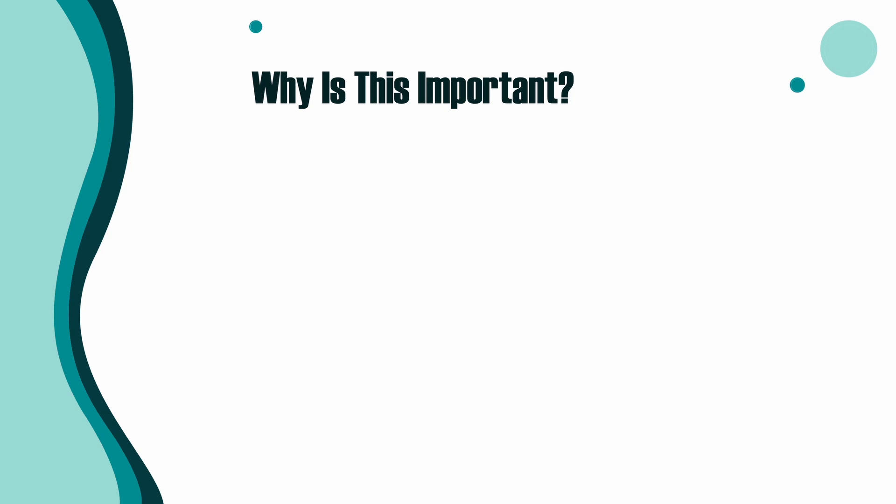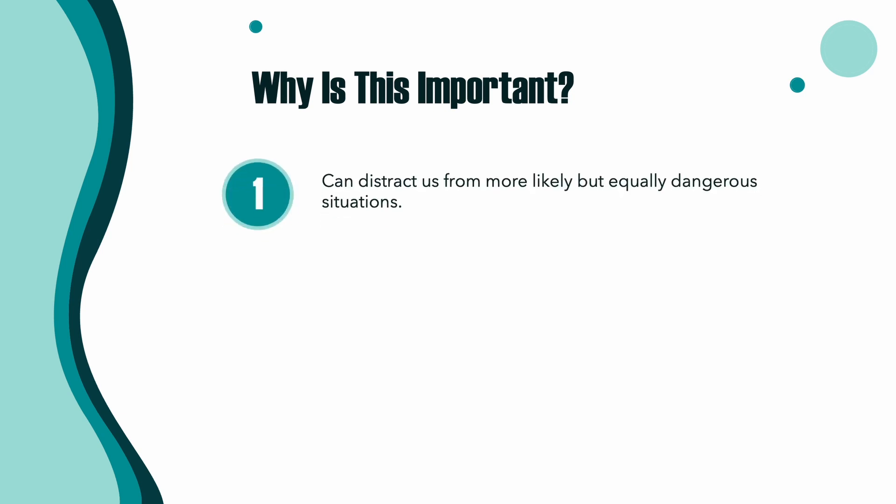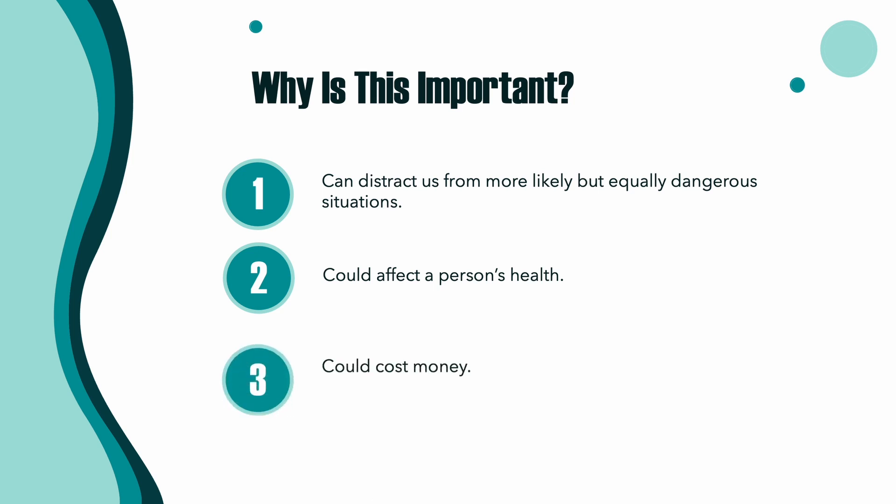It's called the availability bias because we're using information that's easily available to our minds. It's important to be aware of this bias because it can have some really negative effects. Aside from causing unnecessary anxiety, focusing on unlikely events can distract us from more likely but equally dangerous events, such as drowning or getting in a car accident on the way to the beach. It could affect a person's health if they decide not to take a certain medication because they heard a friend of a friend had a bad reaction to it. And it can cost you money if a friend winning the lottery makes you go buy a bunch of tickets, or if you buy an insurance policy you don't need because a company's website had pictures of burnt-down houses and floods.